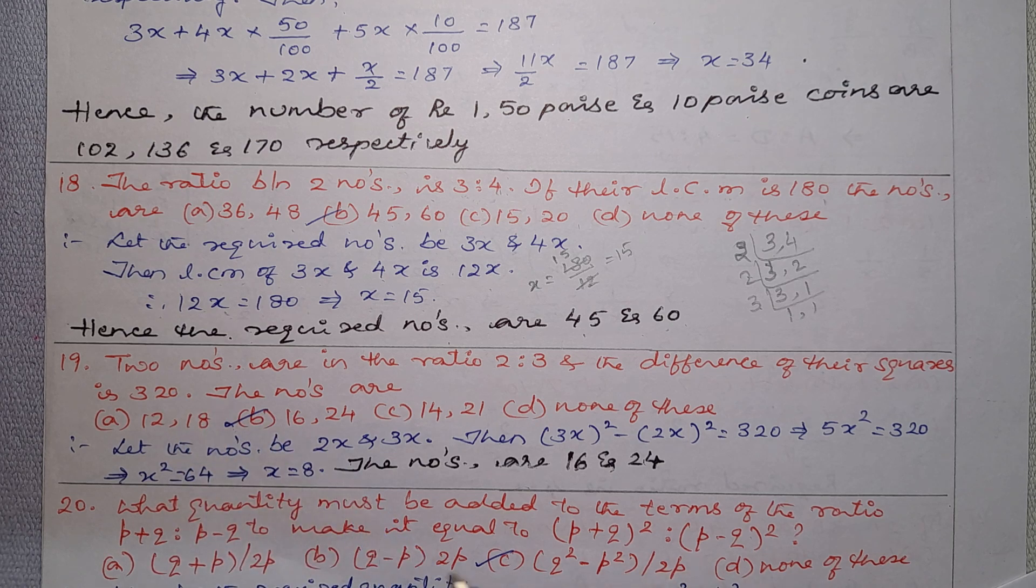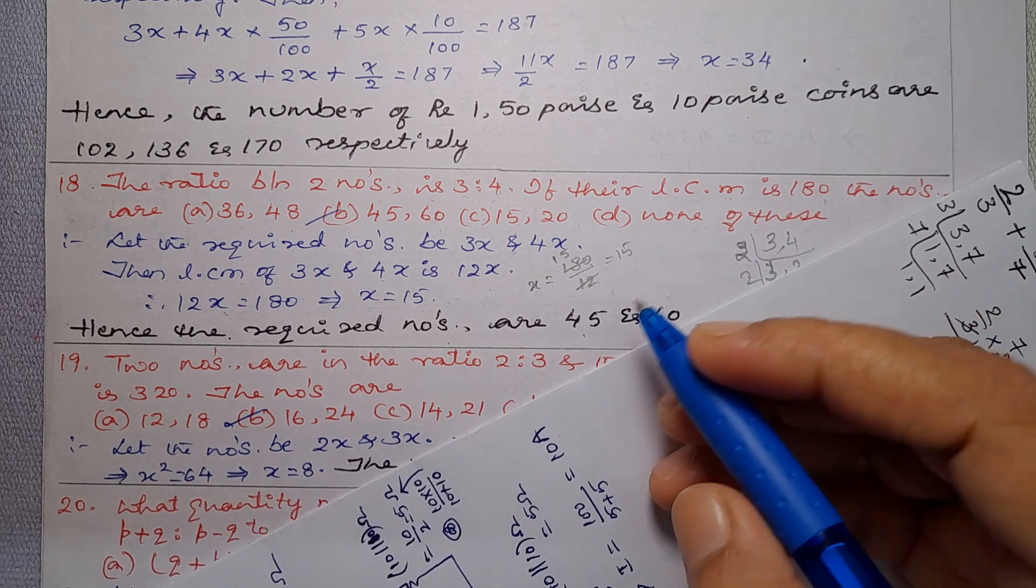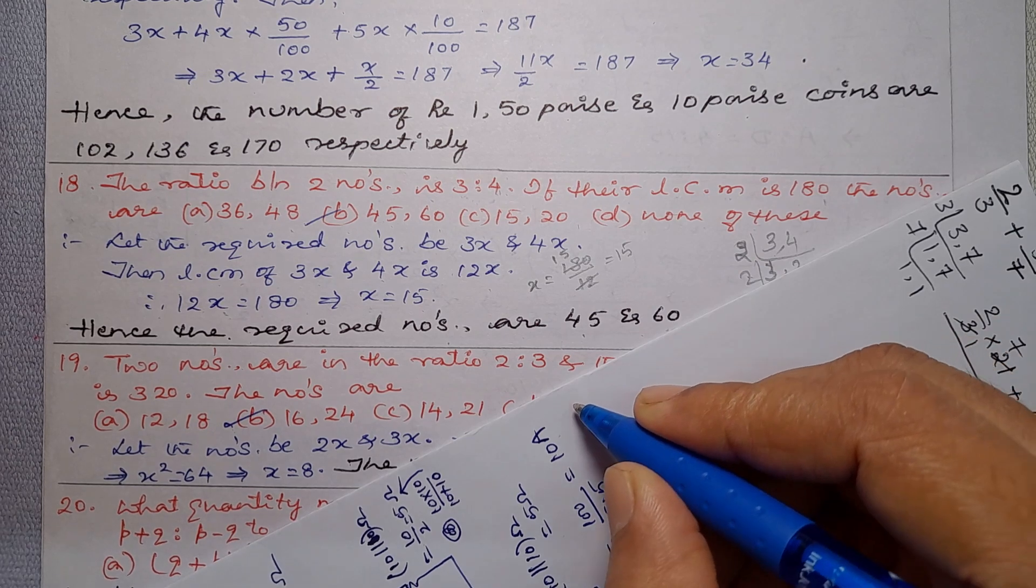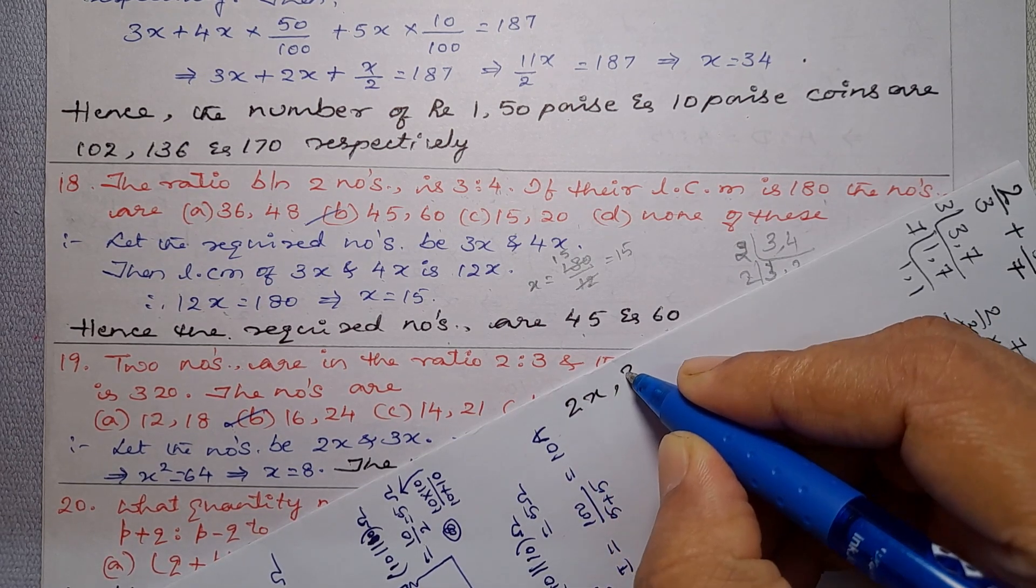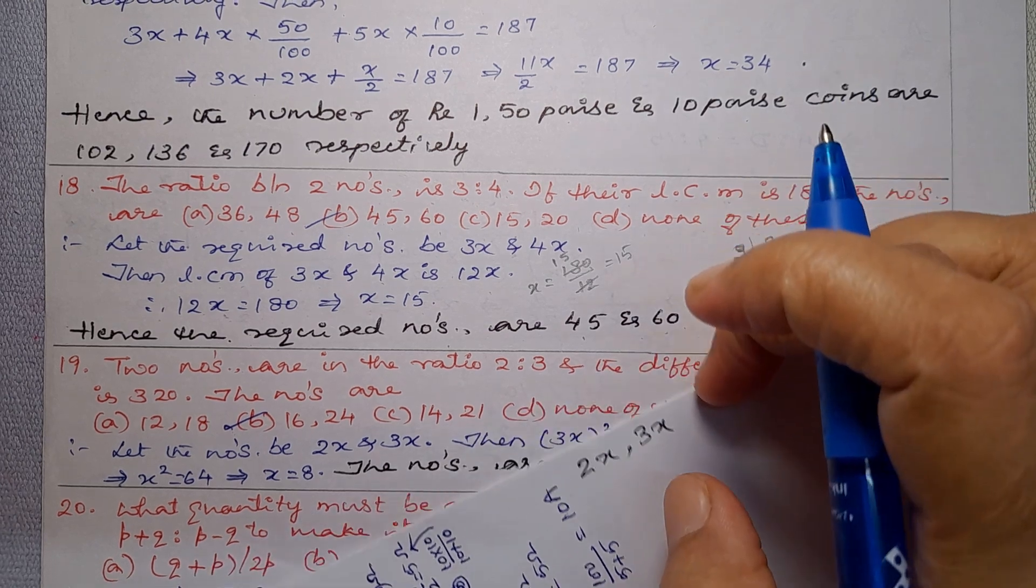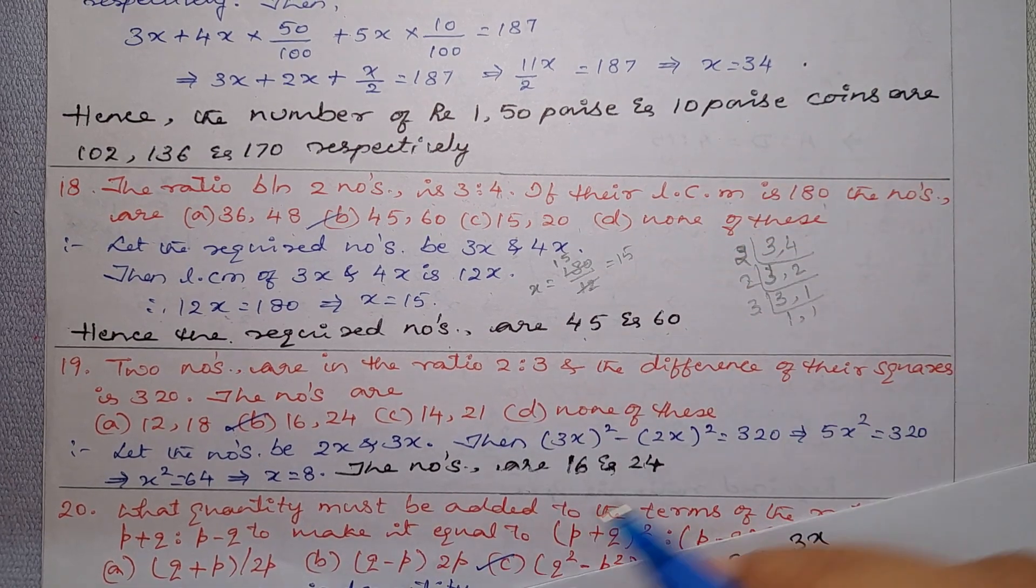So I will find out those numbers. First number 2x, and the second number is 3x.